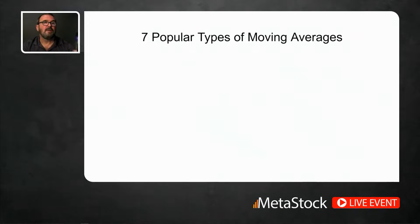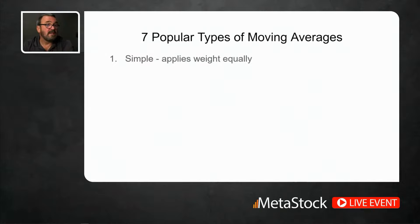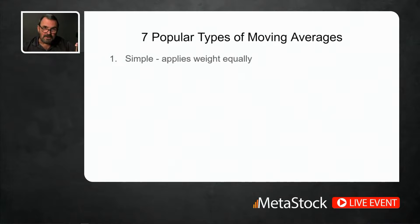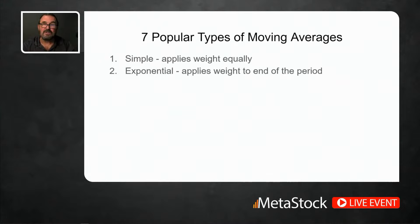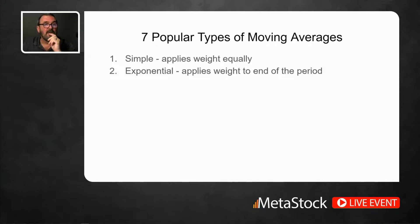There are seven popular types of moving averages. One is the simple moving average, which applies weight equally. 'Weight' means every number contributes to the final equation in an equal way. If it's weighted toward the end — which is what an exponential moving average does — it applies more weight to recent prices in that string of numbers, so those numbers contribute more to the moving average. There's also a triangular moving average, which applies weight to the middle of the string.